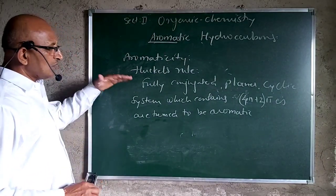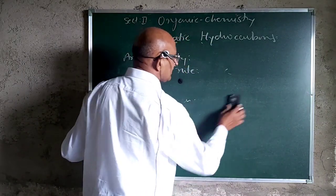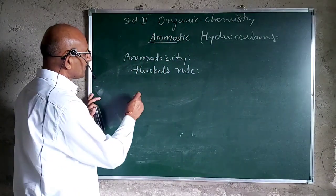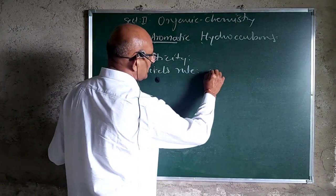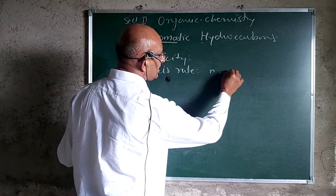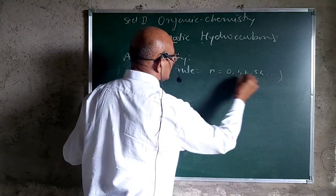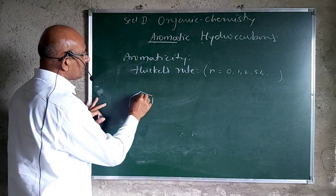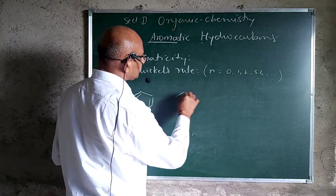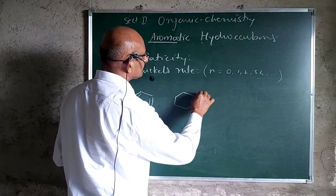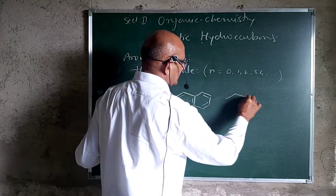Using this formula, we can study different ring systems. Here N is a simple integer starting from 0, 1, 2, 3, 4, and so on. So here benzene, naphthalene, and anthracene are the three different aromatic ring compounds that satisfy Hückel's rule.